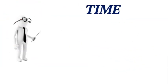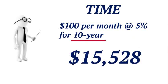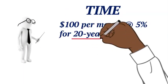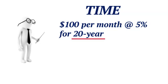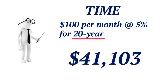Here's an example of time. Suppose you put $100 a month into a savings account for 10 years earning 5%. After 10 years, you'll have $15,528. But if you let that money compound for 20 years — same $100 per month at 5% — you'll have $41,103. Your money more than doubled in the next 10 years. Time is your friend.